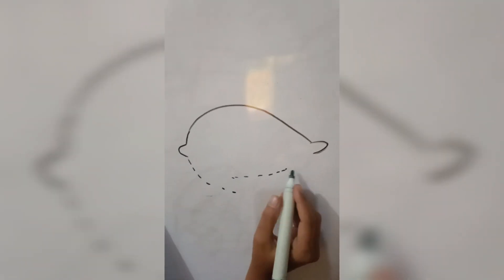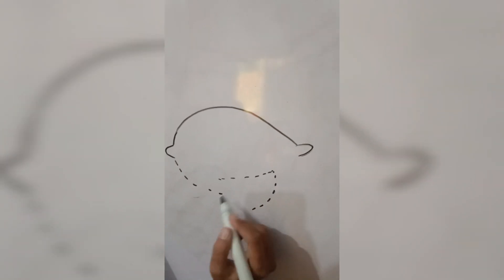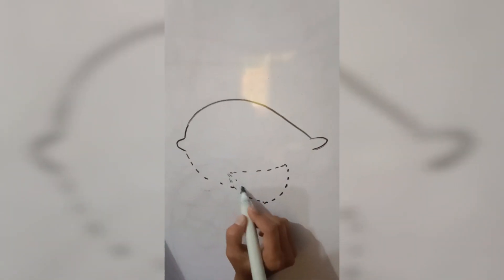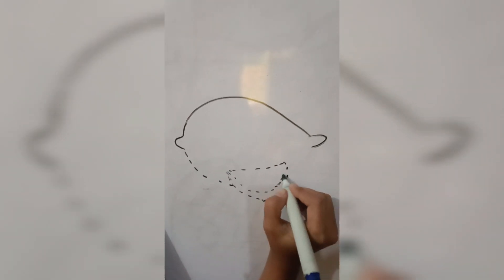Materials needed: whiteboard, whiteboard marker, whiteboard eraser. Start by drawing an oval shape in the center of the whiteboard.